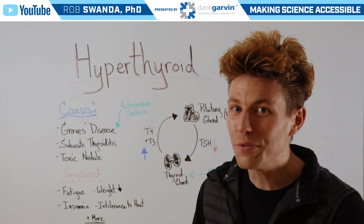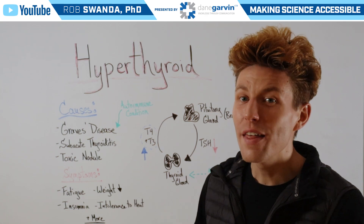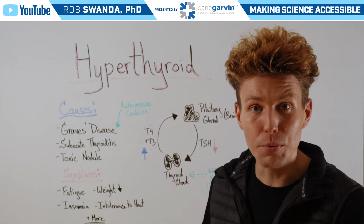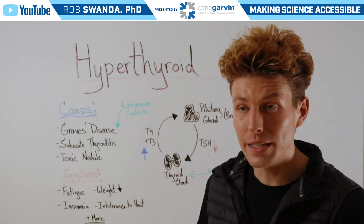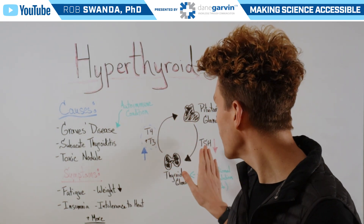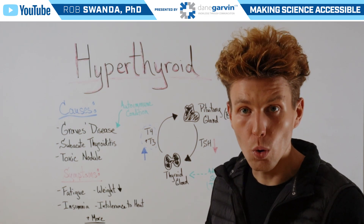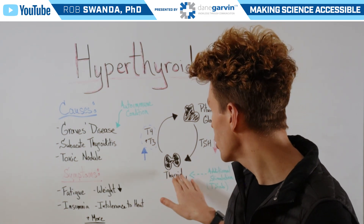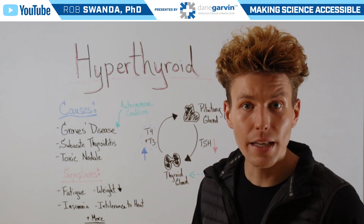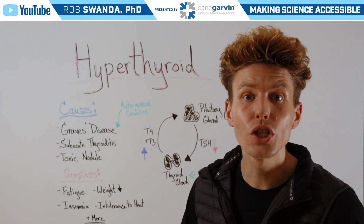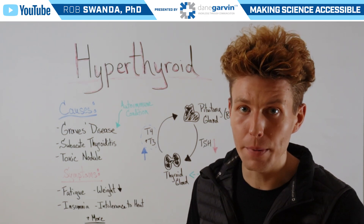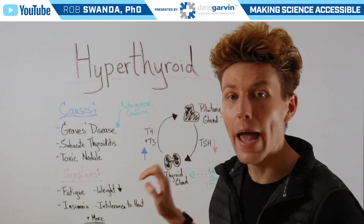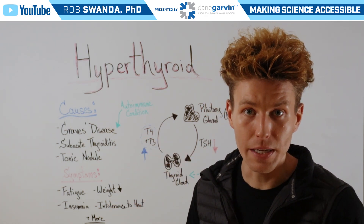As a brief refresher, the pituitary gland in the brain releases thyroid stimulating hormone. This is a start signal to the thyroid gland to release two primary hormones, T4 and T3.